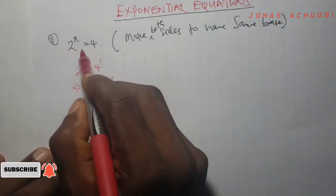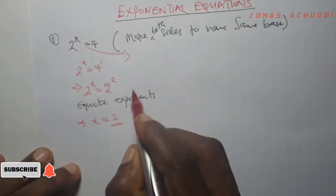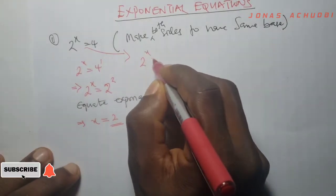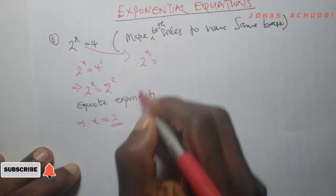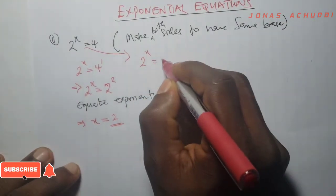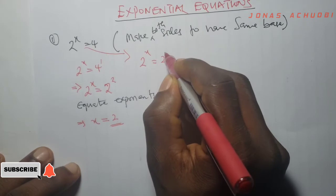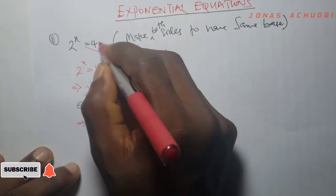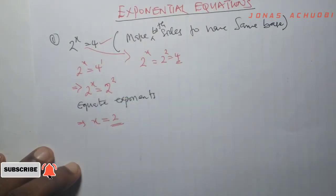And if you come here and check, it will be true. 2 raised to the power x — if I put x as 2, what do I get? 2 raised to the power 2, and that is 4. Which is correct.